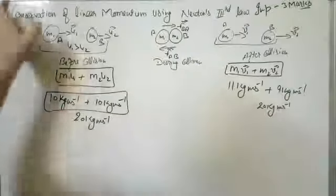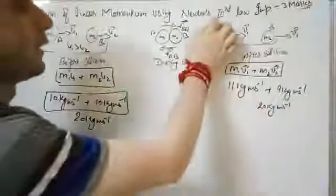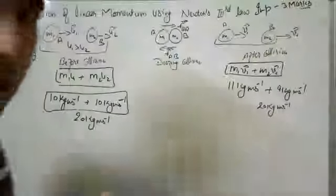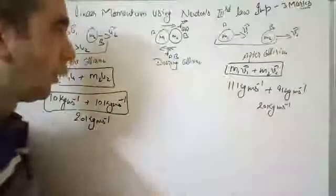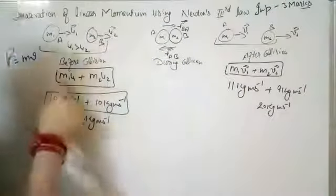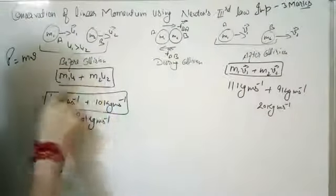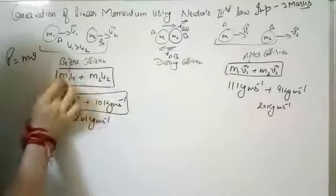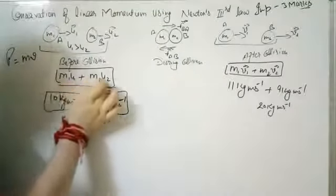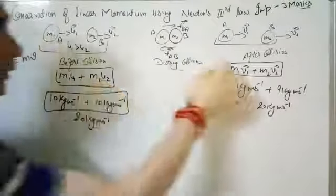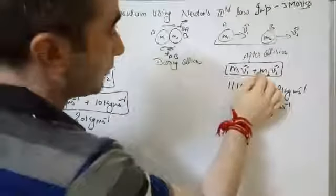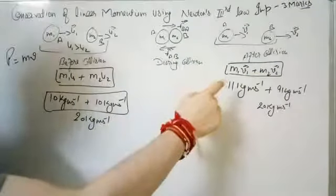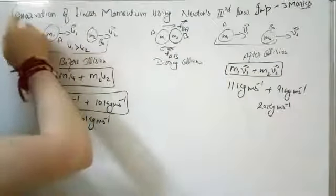This shows, by using Newton's third law of motion, that momentum is conserved. The momentum before collision — M1·U1 plus M2·U2 — equals the momentum after collision — M1·V1 plus M2·V2. This is the proof of the conservation of linear momentum.